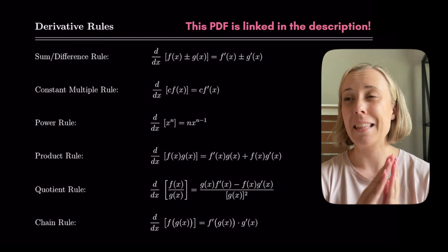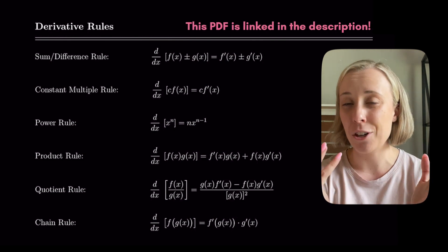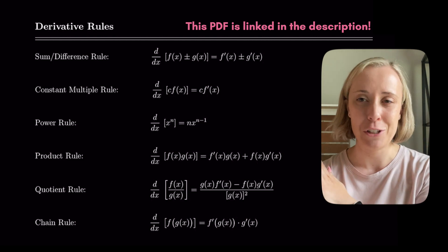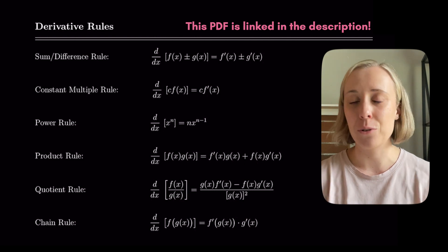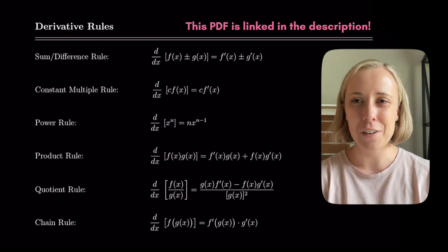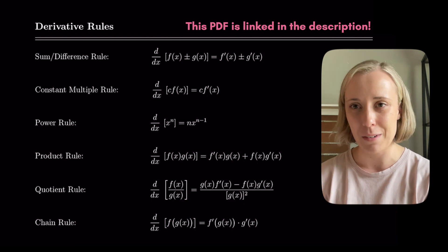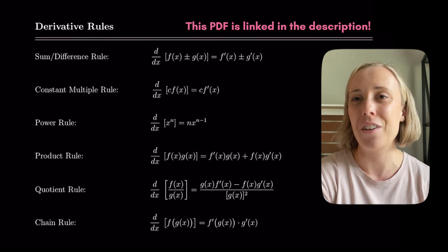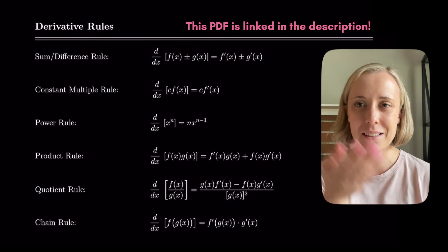We're going to go over the rules I'm using today. My hope is that you've learned these before, so I won't go in depth — I'll just show them and then start the examples. The rules include: the sum or difference rule, where we take derivatives of terms separately; the constant multiple rule, where a constant in front of a term stays with the derivative; and the power rule, where d/dx[x^n] = n·x^(n−1).